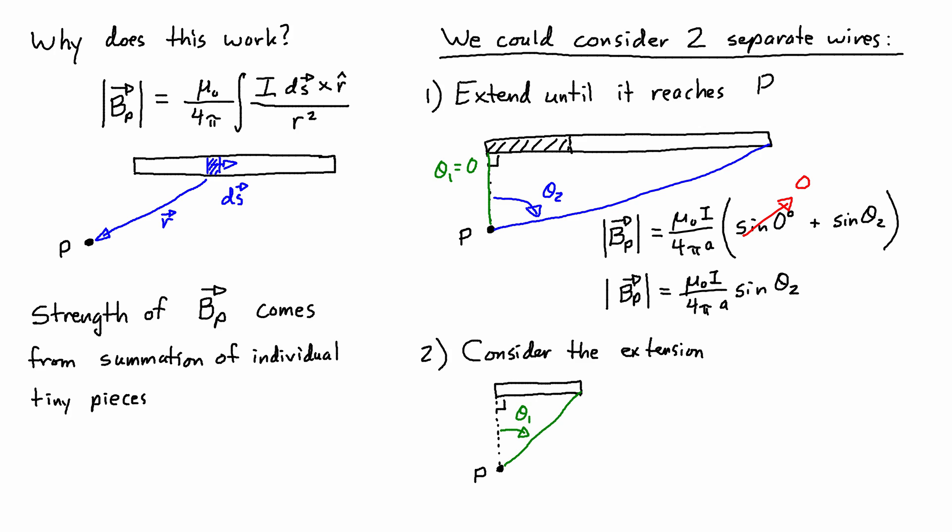So now we're considering just the extension, just the hashed part. And we can similarly show that we would go from one angle, which is 0, to theta 1. So we actually can jump straight to the simplified form, and we would find that the field strength B' of P.